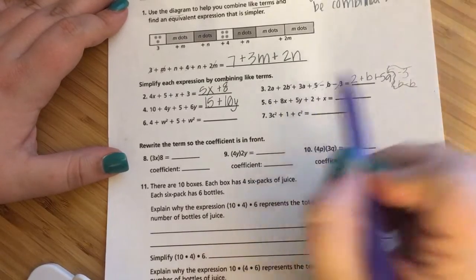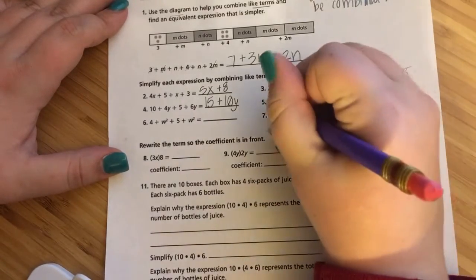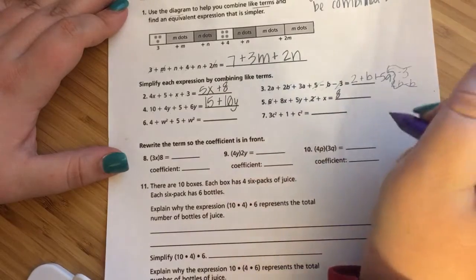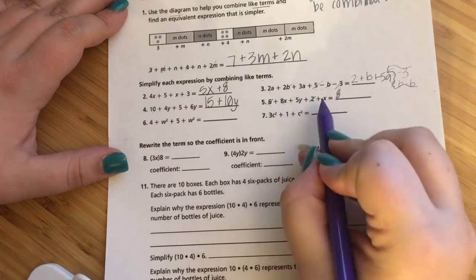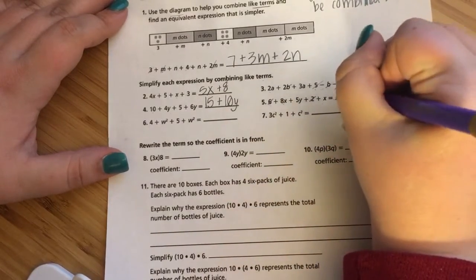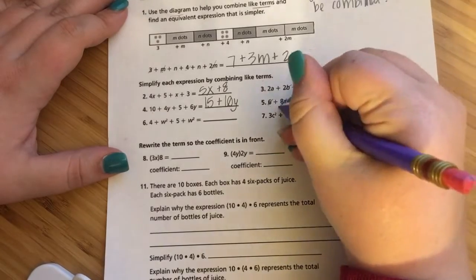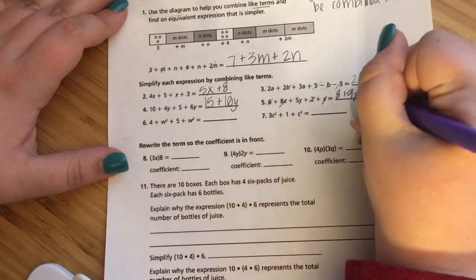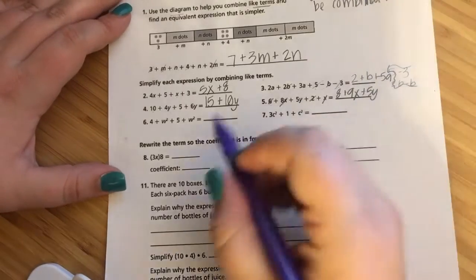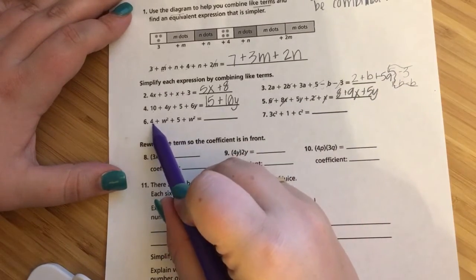So 10 plus 4Y plus 5 plus 6Y is 15 plus 10Y. Pretty straightforward. 6 plus 8X plus 5Y plus 2 plus X. So adding my numbers, 6 plus 2 is 8. And when I go to the X, I have 8 plus 1 is 9X. And 5Y, it's all on its own.